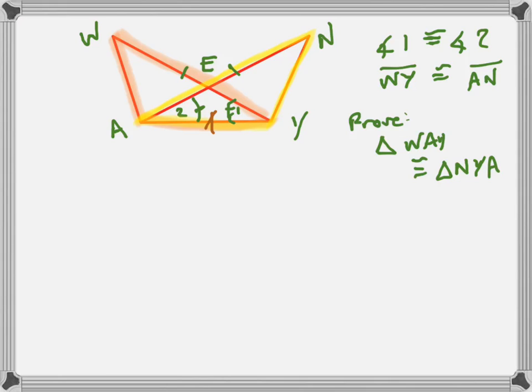So that right there is equal to itself, AY equals AY. And so because that's true, I can see that I'll have a side, an angle, and a side on that one, and a side, an angle, and a side on that one. So I can prove it by side-angle-side. That's my game plan.